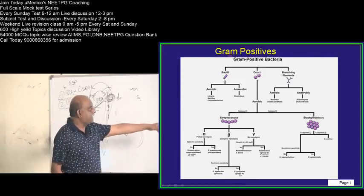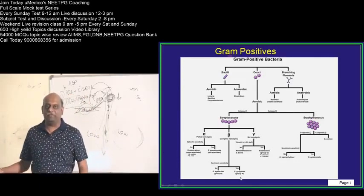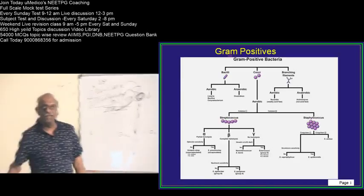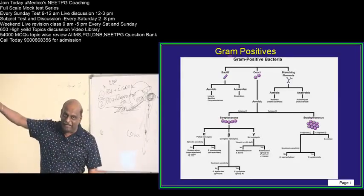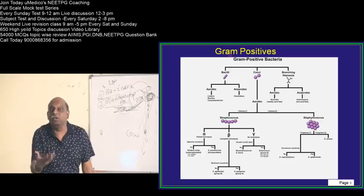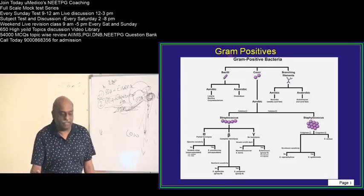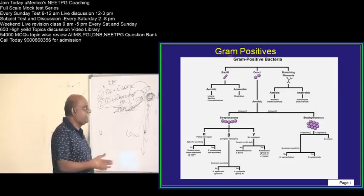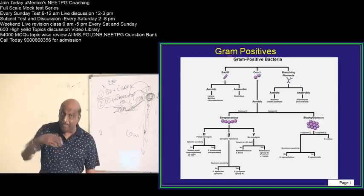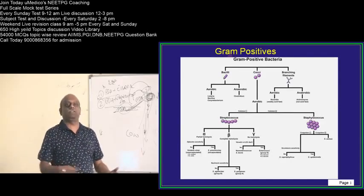Then, that is the reason rheumatic fever is caused by which organism? We say group A beta hemolytic streptococci. That means, who is that group A, sorry, which one is called as group A beta hemolytic streptococci, streptococcus pyogenes.